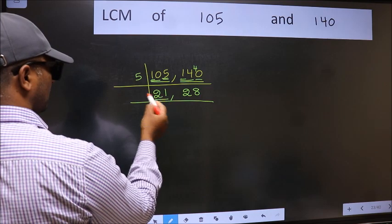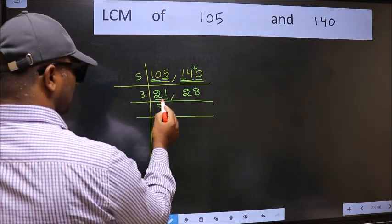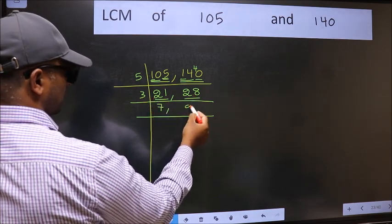Now here we have 21. 21 is 3 times 7 is 21. The other number 28 is not divisible by 3, so you write it down as it is.